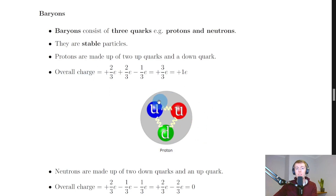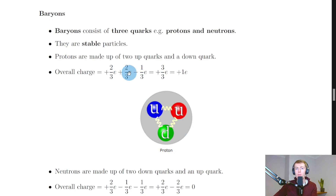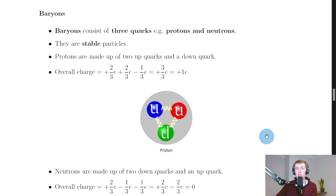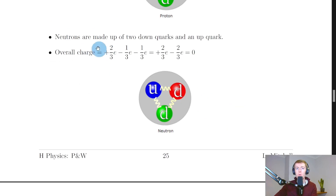To find the overall charge we just add up the charges of the individual quarks. We have plus two-thirds e for one up quark, plus two-thirds e for the other up quark, and minus one-third e for the down quark. Adding those up: four-thirds e minus one-third e gives us plus three-thirds e, which is the same as plus one e — a positively charged proton, which makes sense.